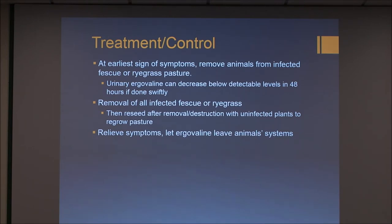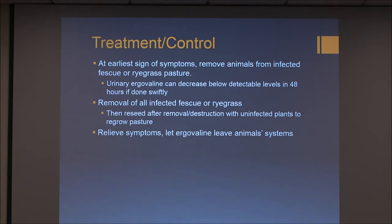Treatment is fairly limited. You can treat the symptoms, but there isn't really a way to just eradicate the ergovaline from the system. The best course of action is to remove animals from an infected fescue or ryegrass pasture so they stop consuming it. You then want to remove any infected fescue or ryegrass — and since you can't see the endophyte, the safest course is just to eradicate all of it. You can reseed with non-endophyte-infested grass or use something other than fescue or ryegrass if you don't want to risk it, and you can pretty much just relieve the symptoms and let the ergovaline leave the animal's system in a timely manner.